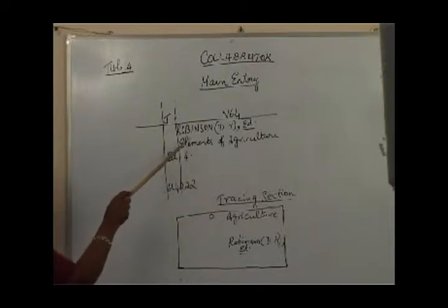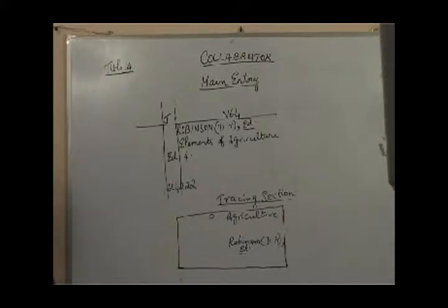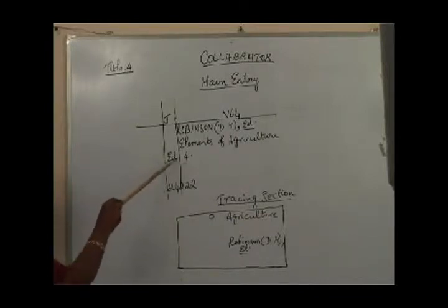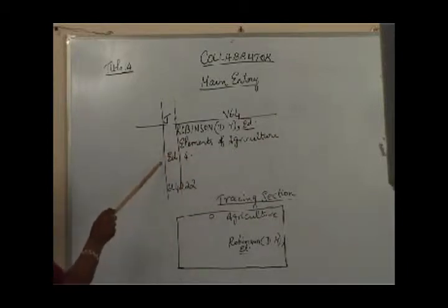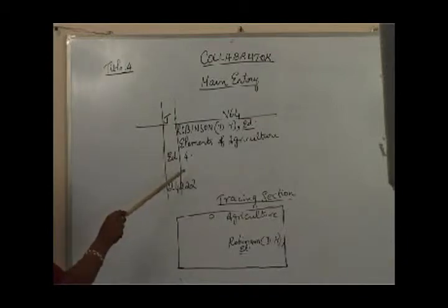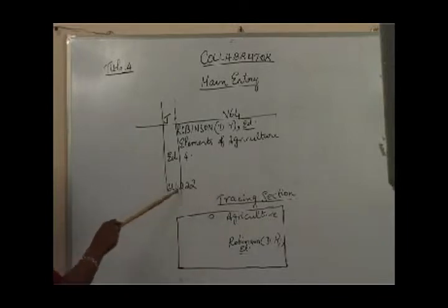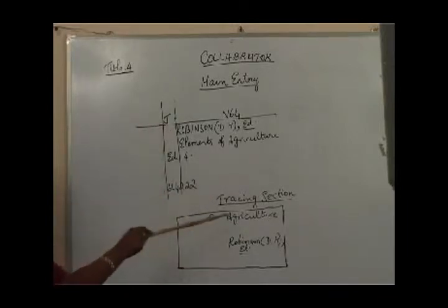Then comes the title section written starting from the second vertical. After the title there is no subtitle, so we go for the edition. The edition is given as 14th, but it should be written as 'ed.4'. As there is no space, continuation of the title section is taken to the first vertical line. There is no series information, and the last section is the accession number written in the bottom-most line of the card starting from the first vertical.